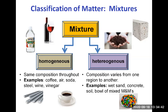Heterogeneous mixtures are the easiest to identify because their composition varies from one region to another — visually you can tell it's made of more than one substance. For example, wet sand: you can see the sand and the water and distinguish one from the other. Concrete shows different pieces with different stone colors and textures, so it's obviously not homogeneous. Soil found on the ground is another heterogeneous mixture, as is a bowl of mixed M&Ms — the colors alone tell you there's more than one substance.